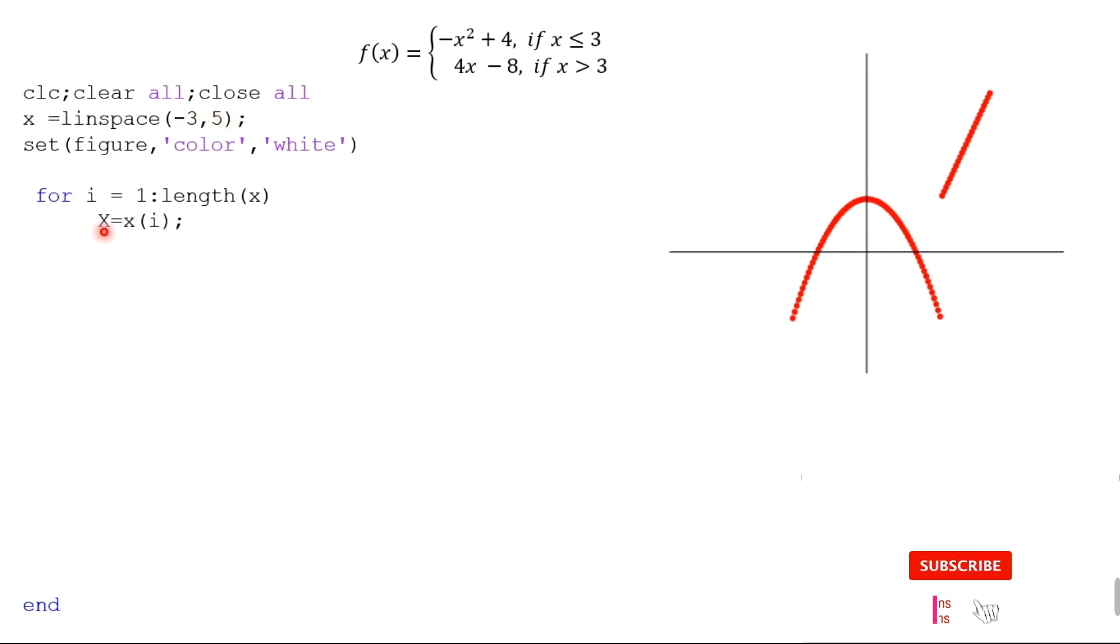We use capital X equals small x of i. If x of i is less than or equal to 3, then we use this function: minus x dot square plus 4. Else, if x is greater than 3, then we use this expression: y equals 4 times x minus 8.